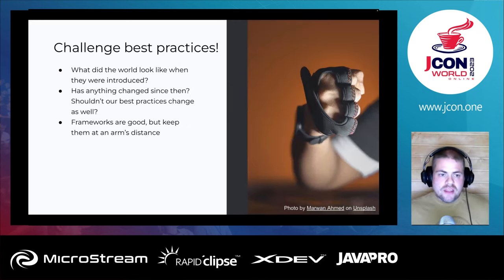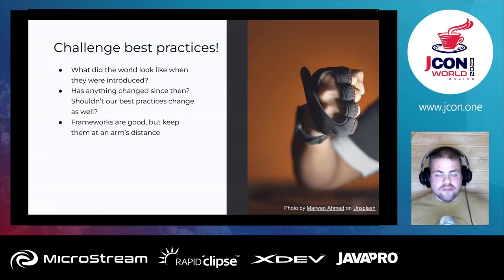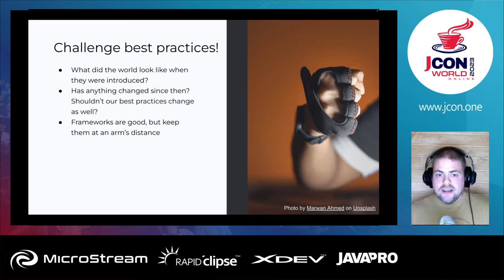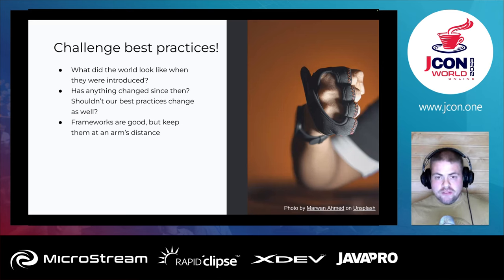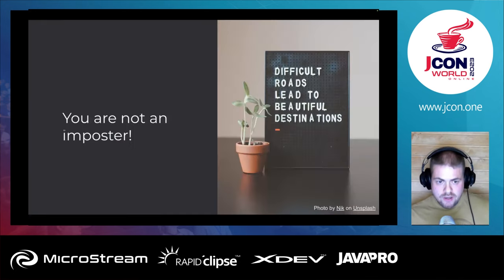Third takeaway: challenge the best practices. You have to think about what the world looked like when these best practices and APIs were introduced — chances are the world has changed quite a lot since then, and shouldn't we change our APIs and best practices as well? What worked yesterday may no longer be the best we can do today. I've come to the conclusion — which I've read somewhere — that annotations and frameworks are good, but you should keep them at arm's length. I don't want frameworks to prevent me from writing good code. For instance, if you want to build something a little more complex with JPA, you can't do everything you'd like because of the restrictions of the relational database.